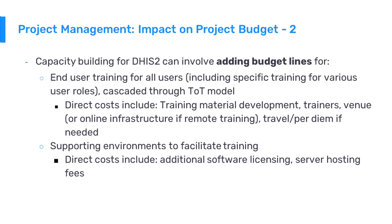End-user training can be cascaded through a training of trainers model. Direct costs often include the development of training material, the trainers themselves who may travel to various locations, a venue for the training, and travel and per diem costs. There is also a potential cost for supporting environments to facilitate training, which can include additional software license fees and server or infrastructure fees for hosting and maintaining various pieces of software.